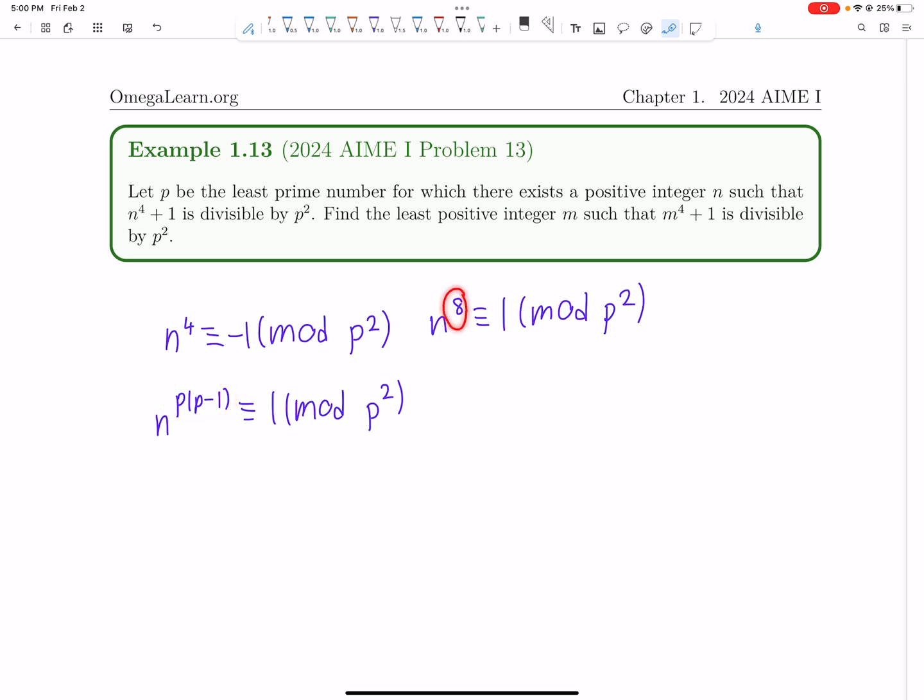So the order always has to divide this p times p minus 1 term, right? Because let's say 8 did not divide p times p minus 1. Well, then we would not have that. If 8 is the smallest value such that n to the 8 is 1 mod p squared, then we would have 8 times 8 to the something, let's say 8a would be 1 mod p squared. And if p times p minus 1 is not a multiple of it, then p times p minus 1 will not be 1 mod p squared. So it's a contradiction.